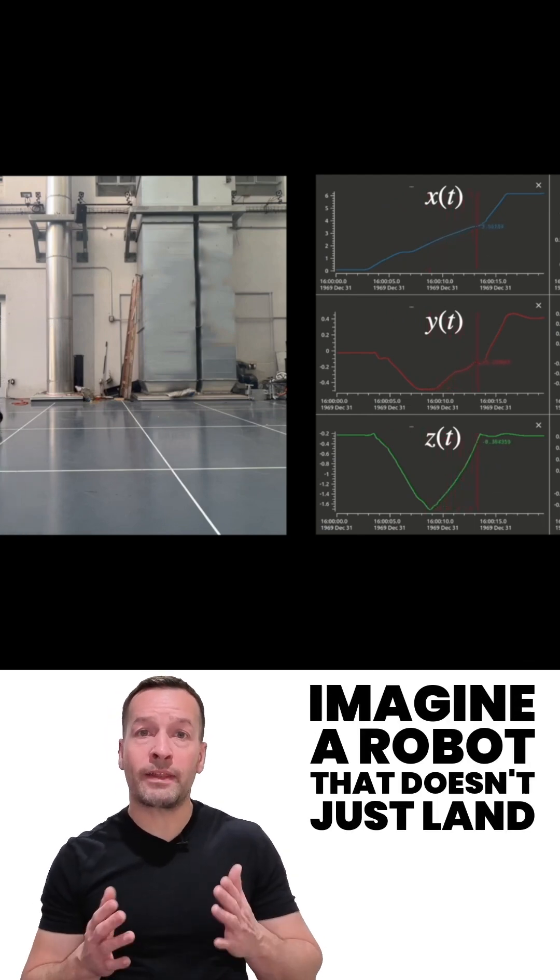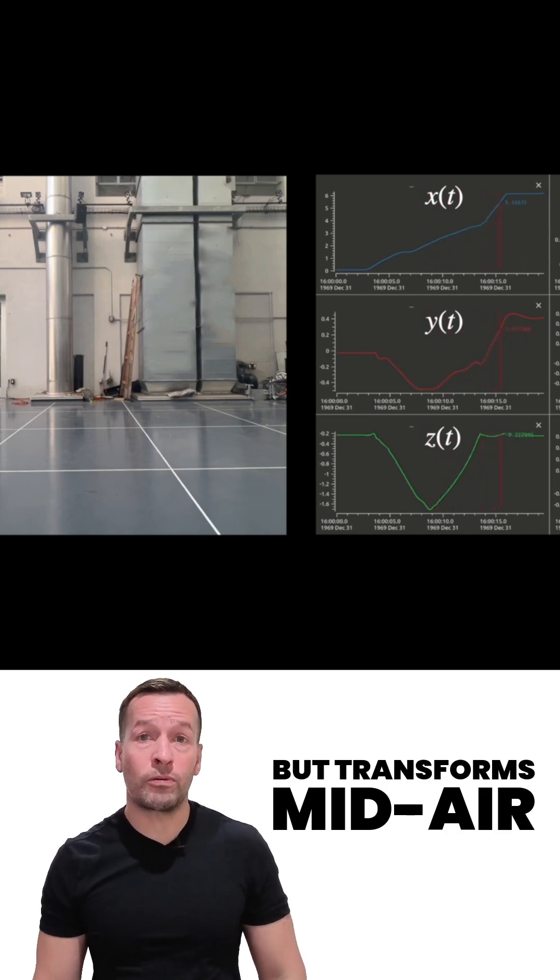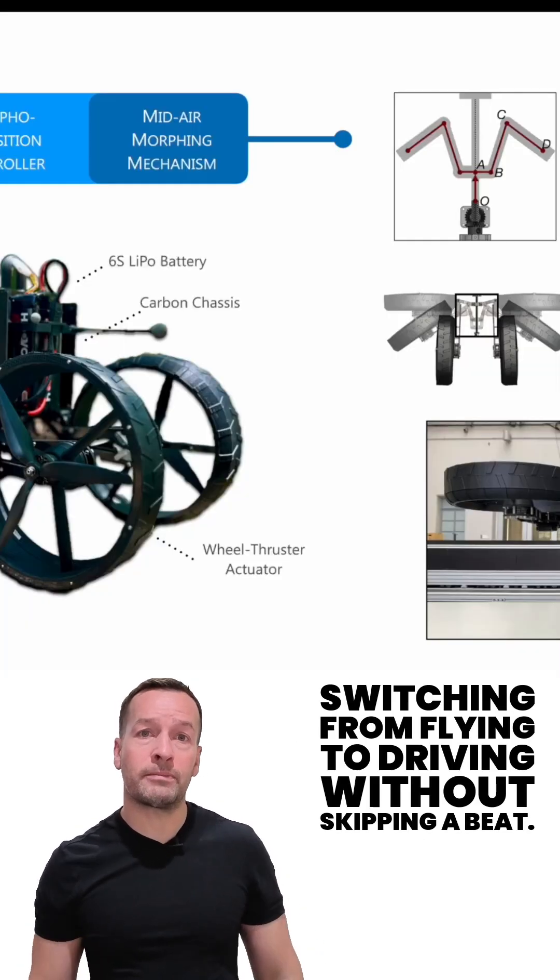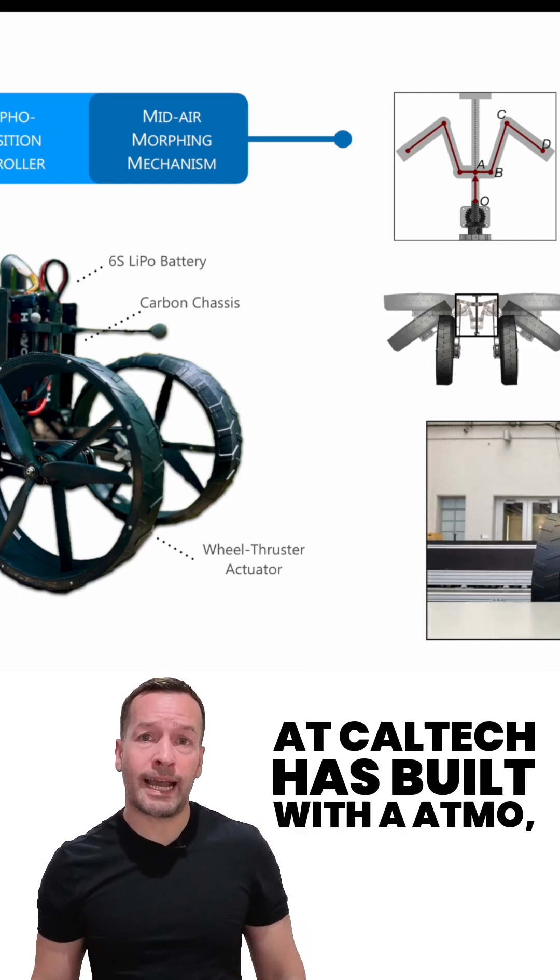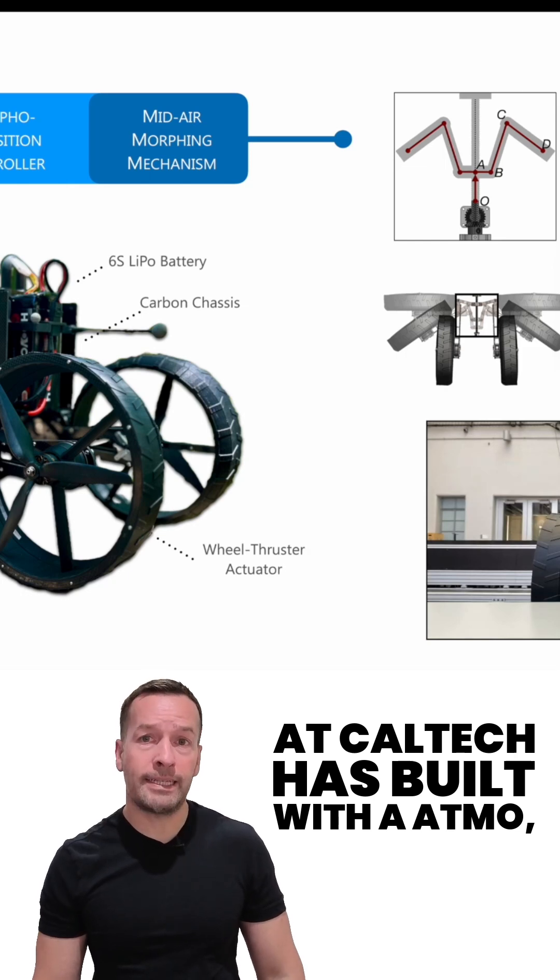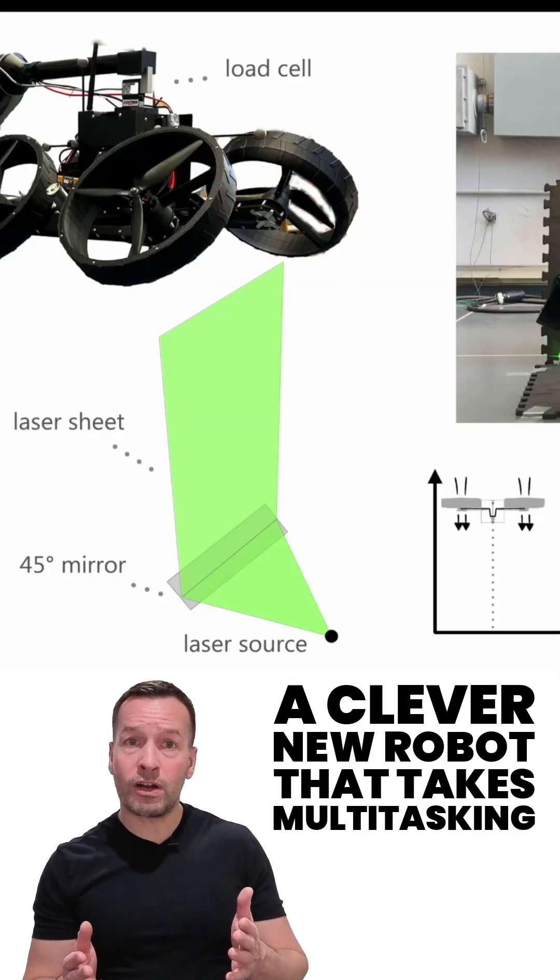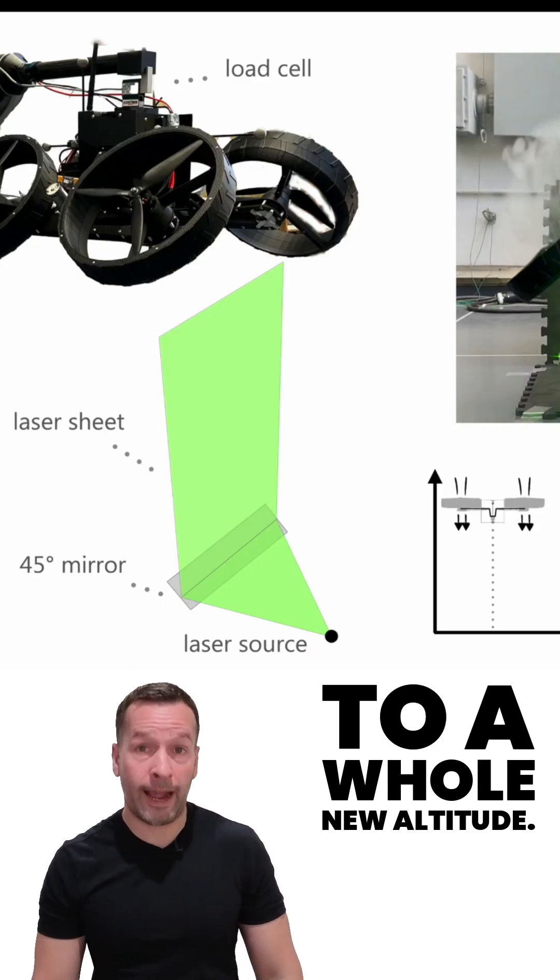Imagine a robot that doesn't just land but transforms mid-air, switching from flying to driving without skipping a beat. That's exactly what a team of engineers at Caltech has built with ATMO, a clever new robot that takes multitasking to a whole new altitude.